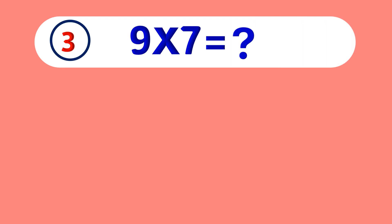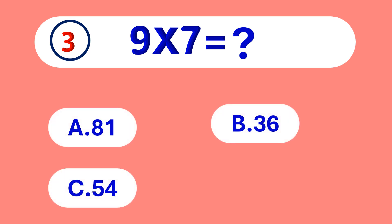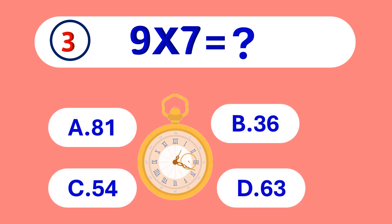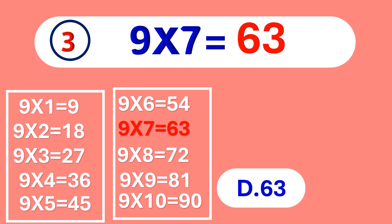9 times 7 is equal to... 63. 9 times 7 is 63.